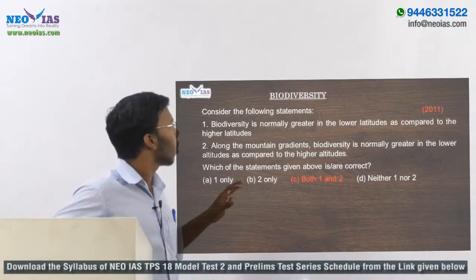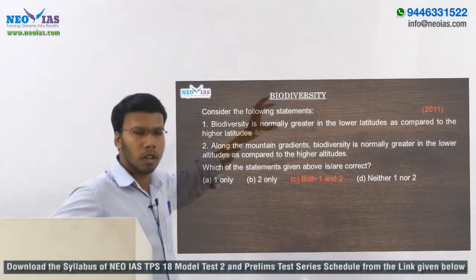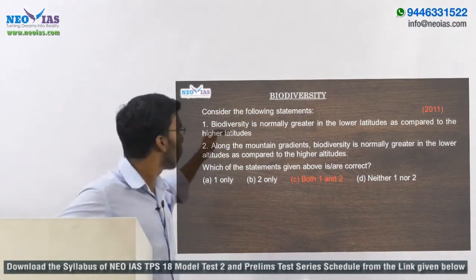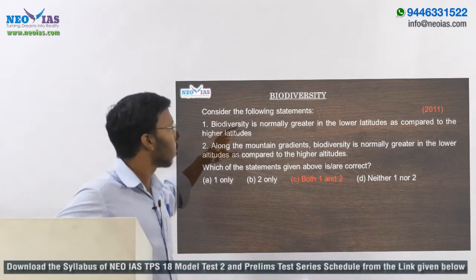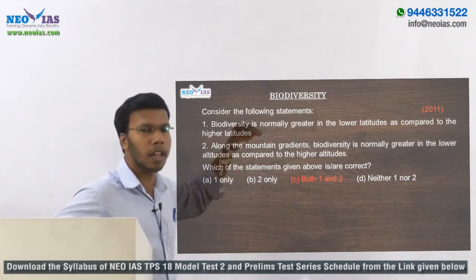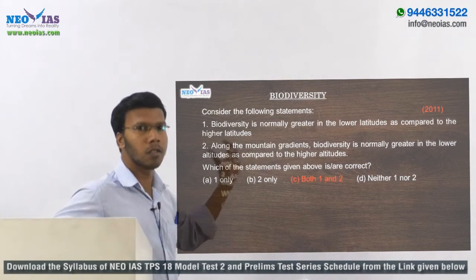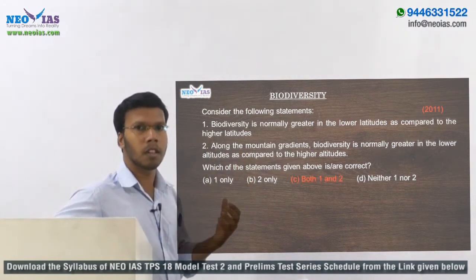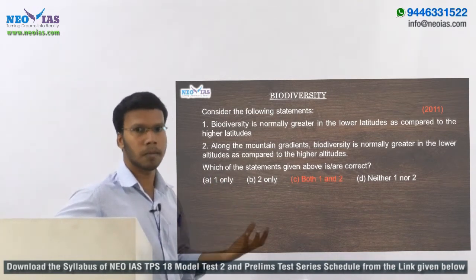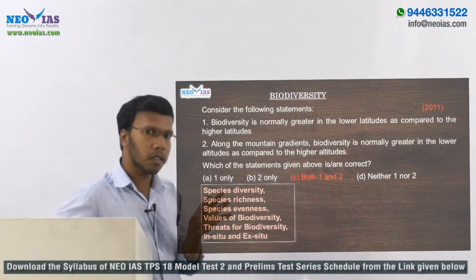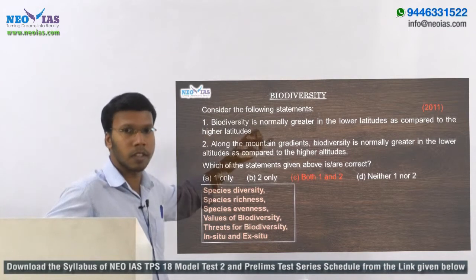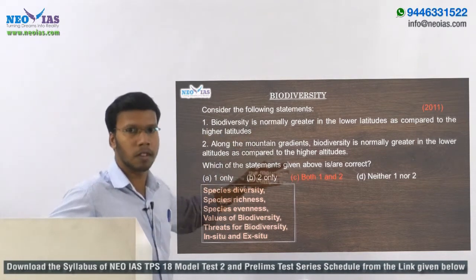The second important topic is biodiversity. You need to be thorough with all biodiversity-related concepts. Questions have been asked about the distribution of species based on latitude and altitude. You need to know what biodiversity is, its types, and the factors determining biodiversity. The main types are species diversity, genetic diversity, and ecosystem diversity.